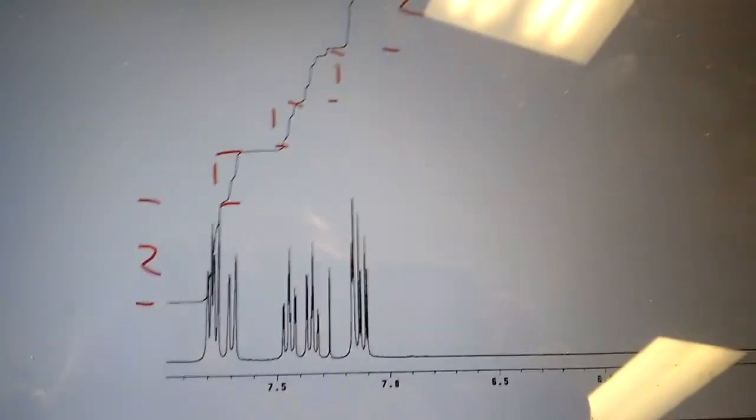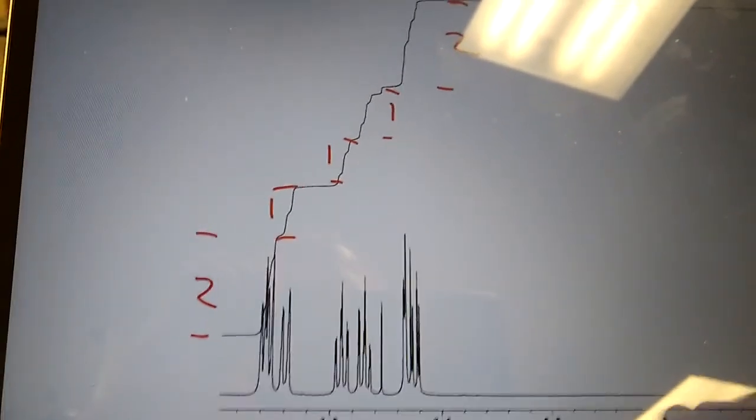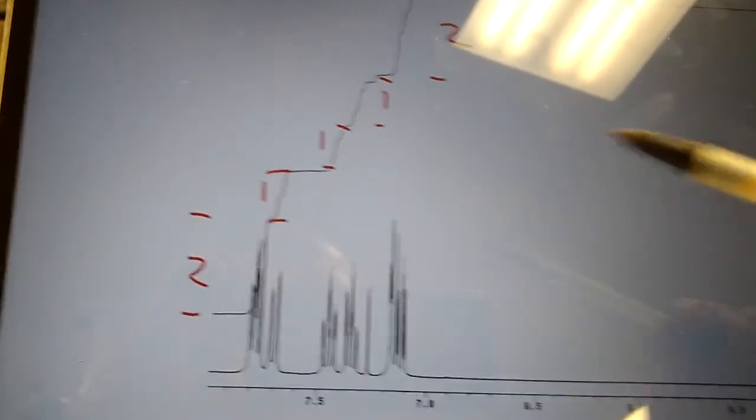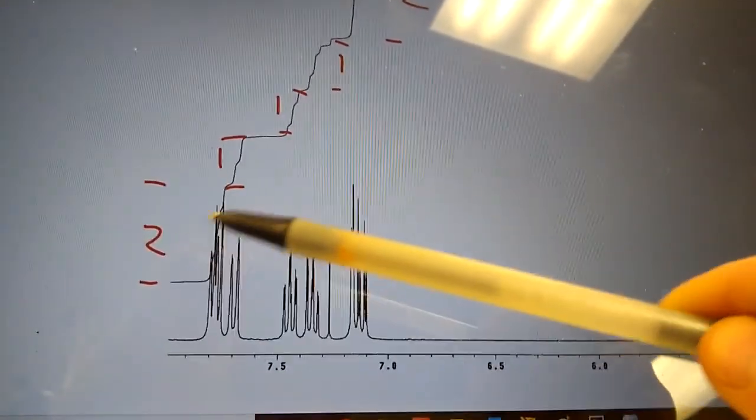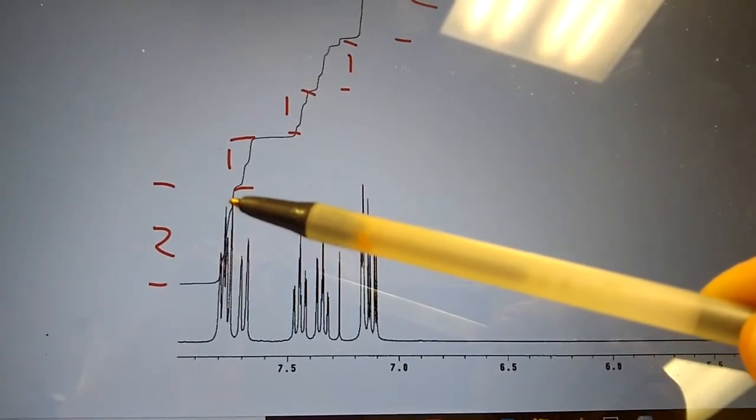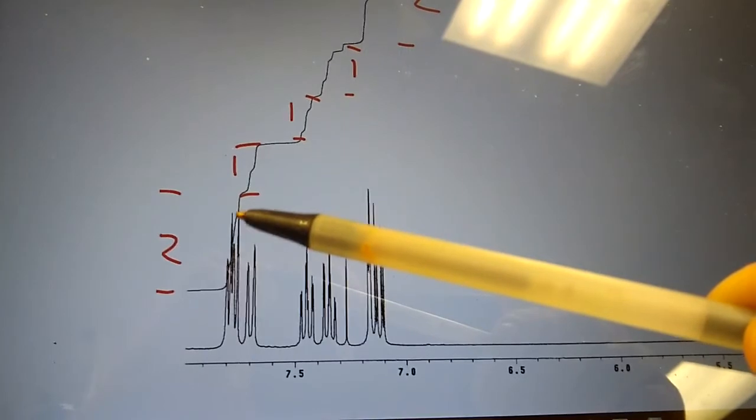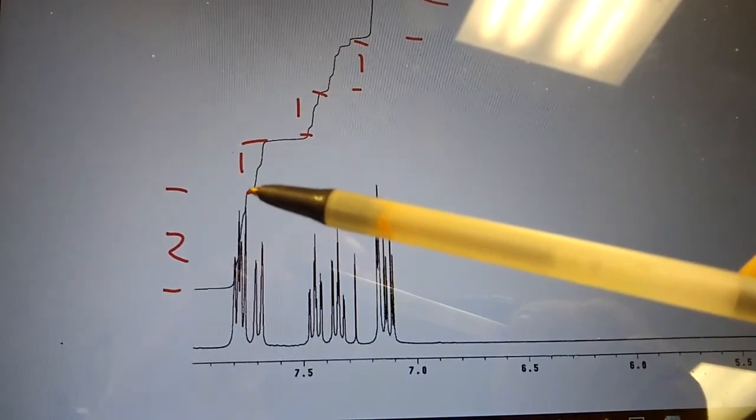There are a couple different types of spectra that you might be shown when you need to measure the integration for a signal. If it's given to you like this, you would take your ruler and you would measure the distance of this little stair step squiggly line.